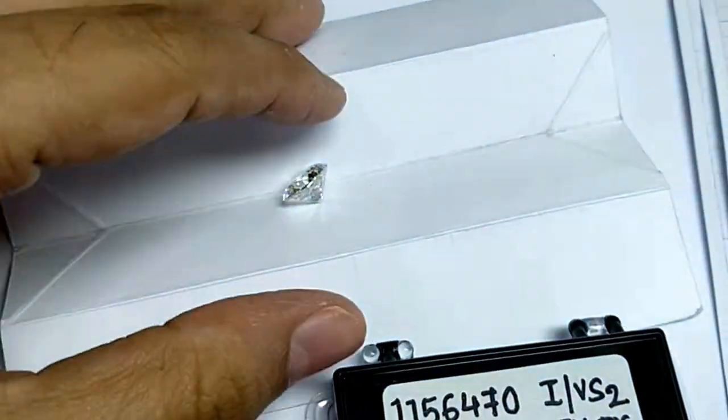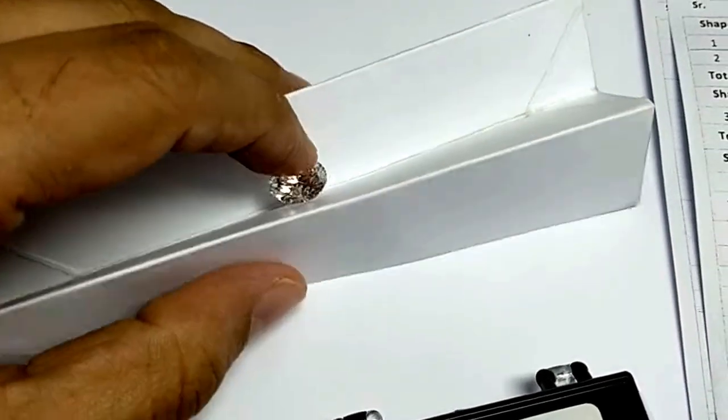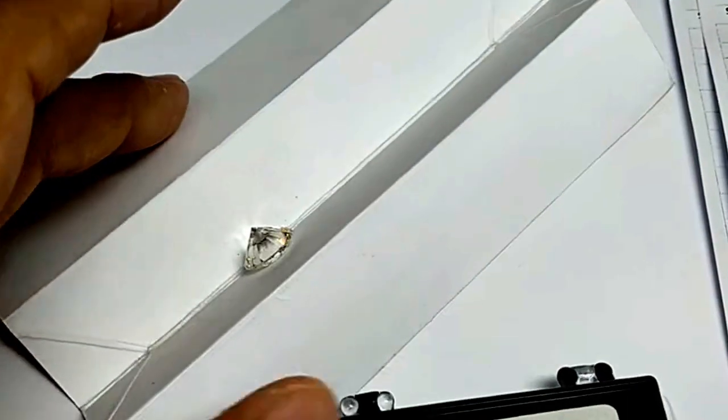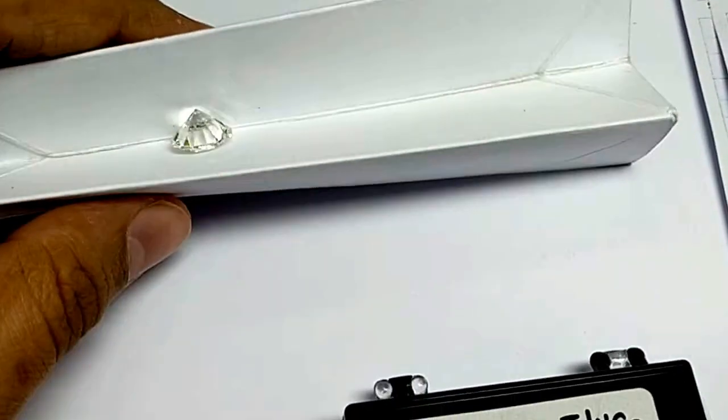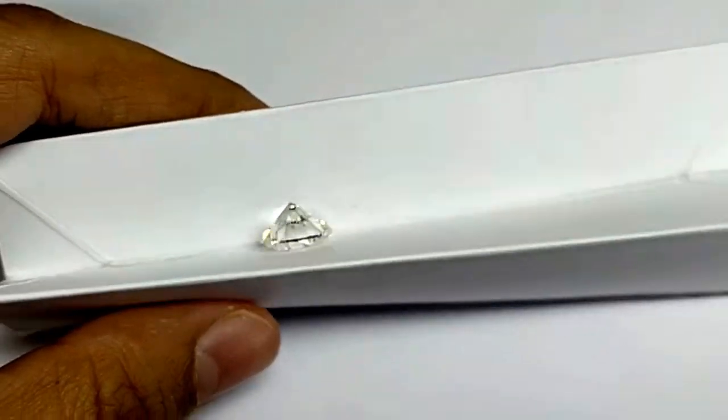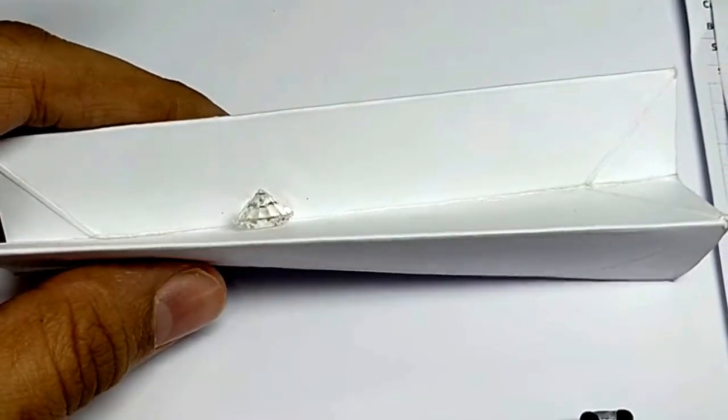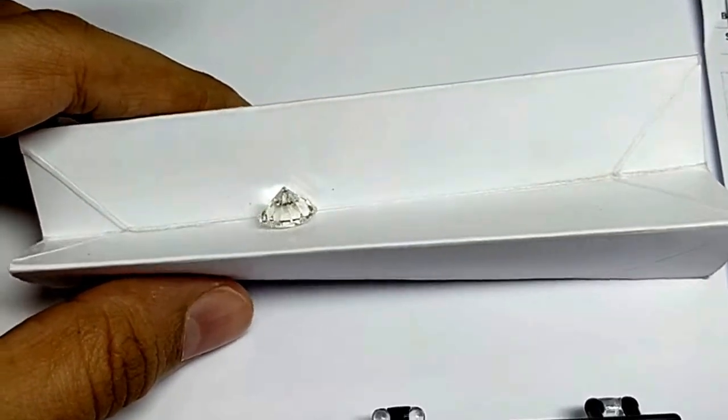This is how the color looks under the shade card. If you're planning to buy an I color of any size, this should be a good reference for you. It does look a little bit yellowish when seen under proper lighting.